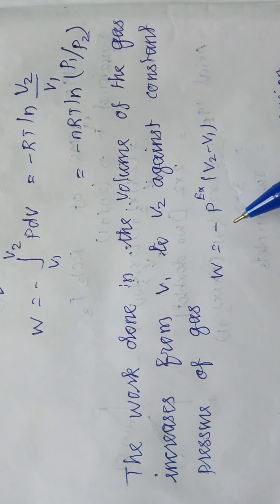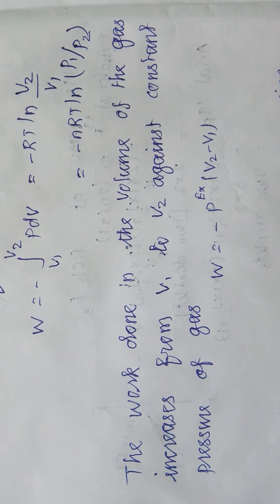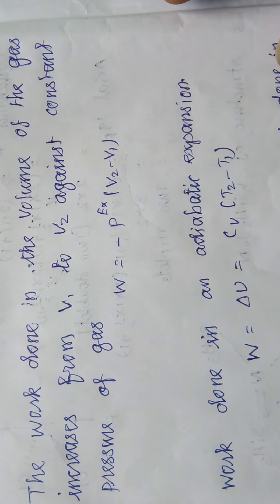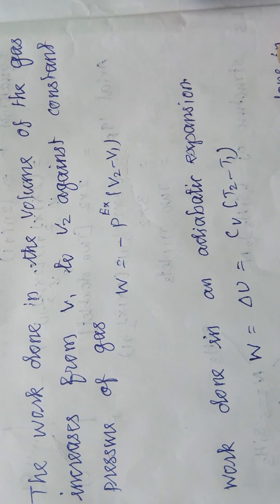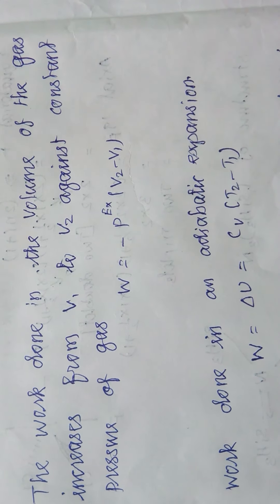The minus sign shows that the work is done by the system. If it is positive, the work is done on the system; if it is negative, the work is done by the system.